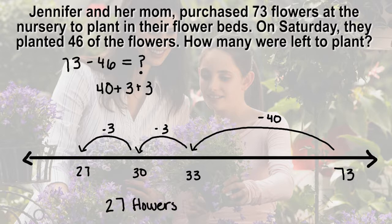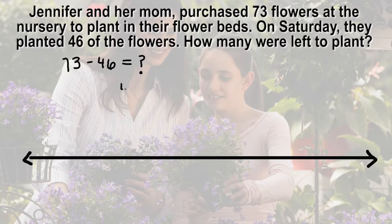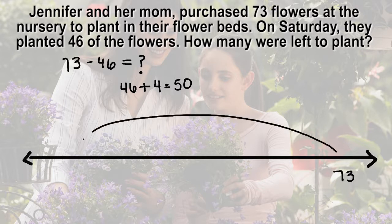Another way to solve this problem would be to round 46 up to 50 and then compensate by adding the 4 back at the end. From 73, jump back 50 to land at 23. Then add back in the 4 to land at 27.